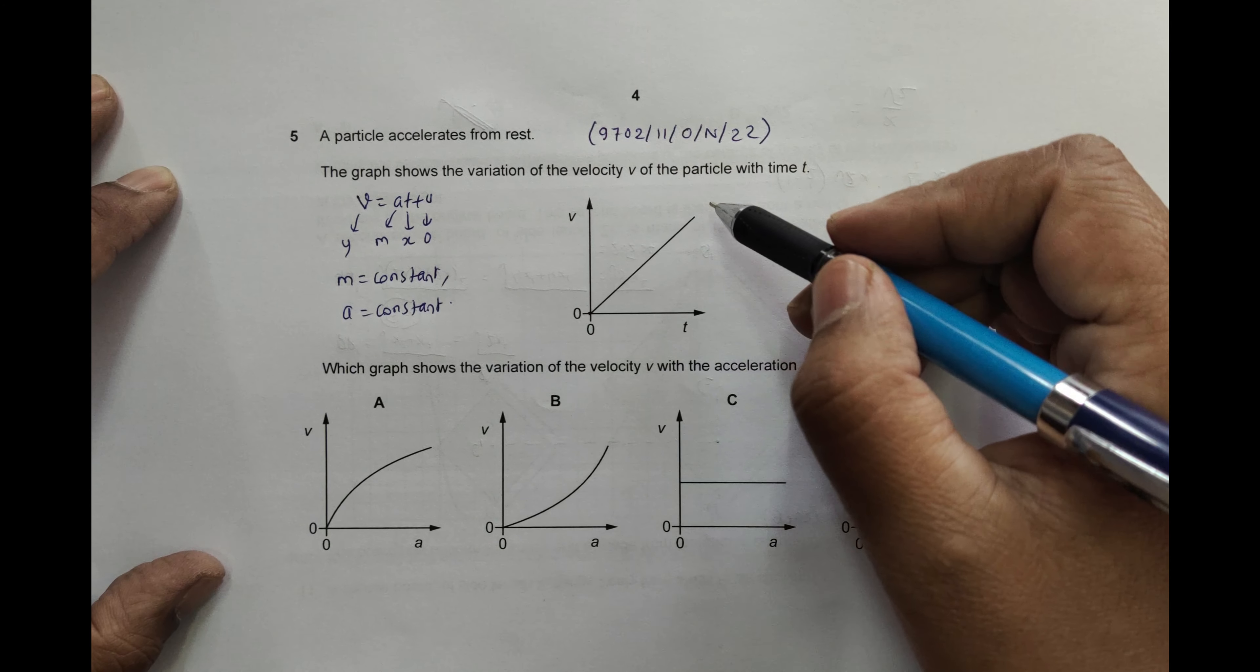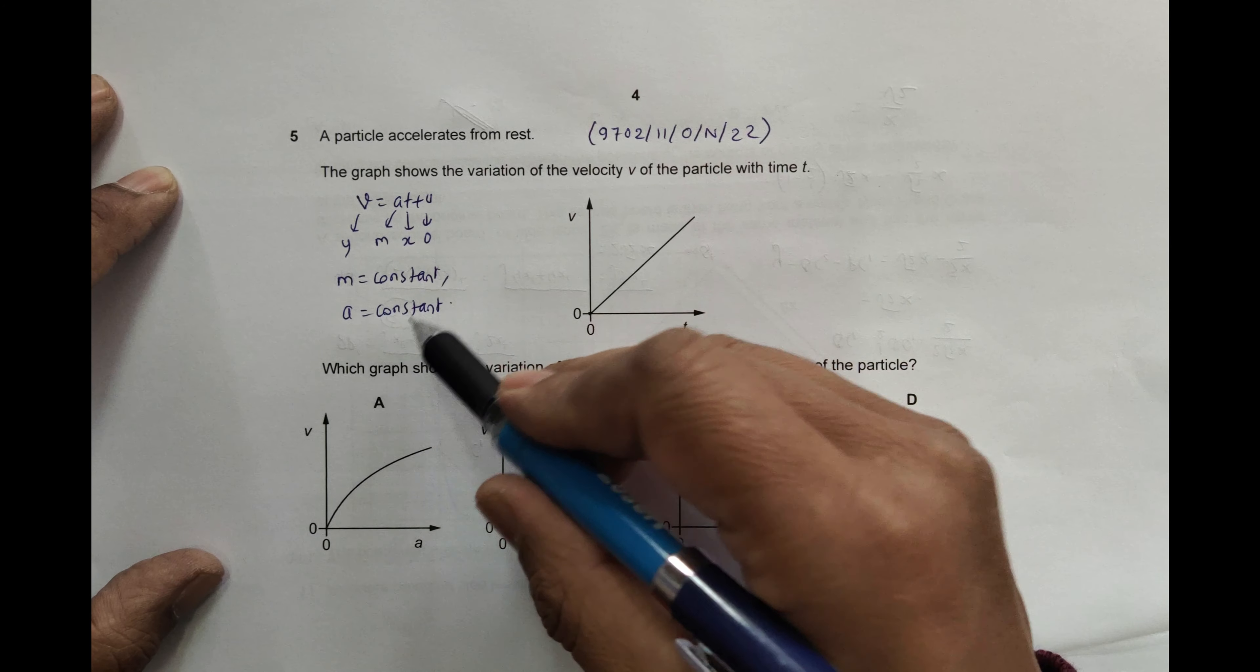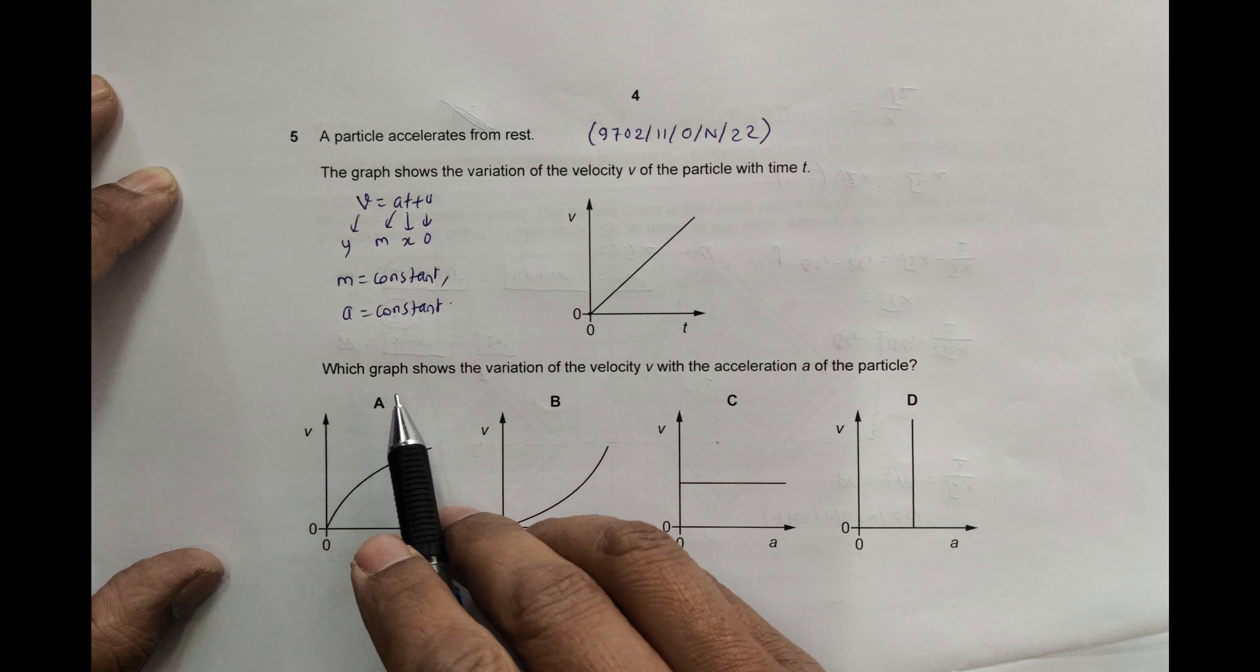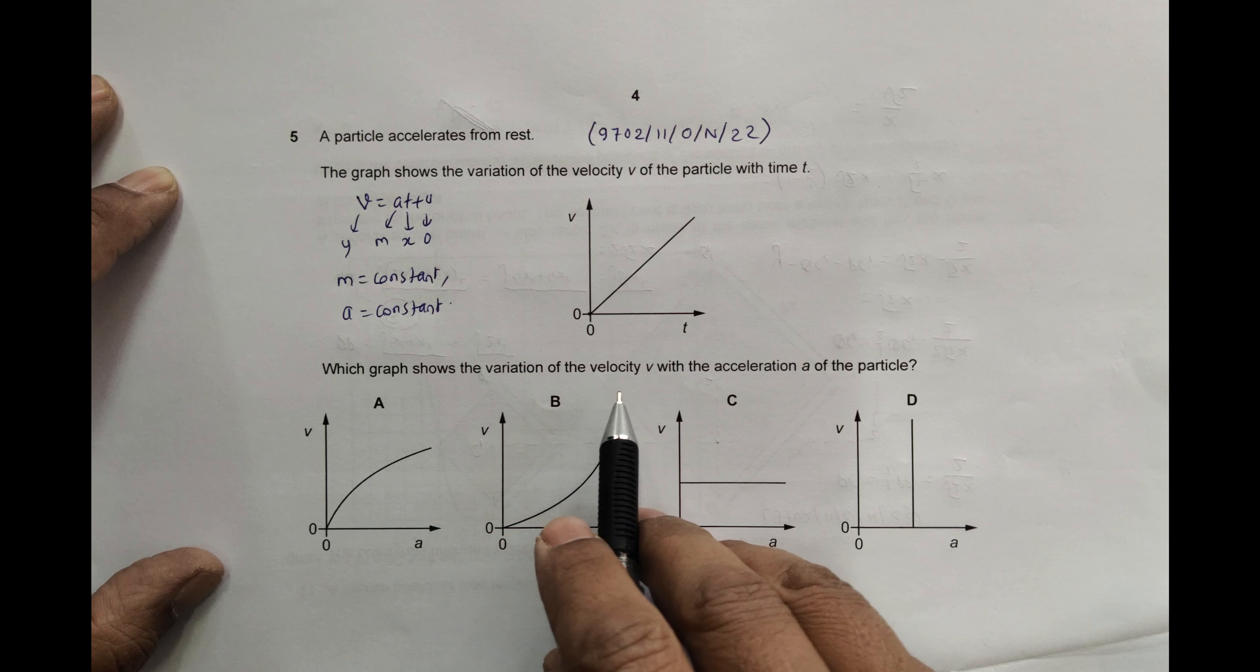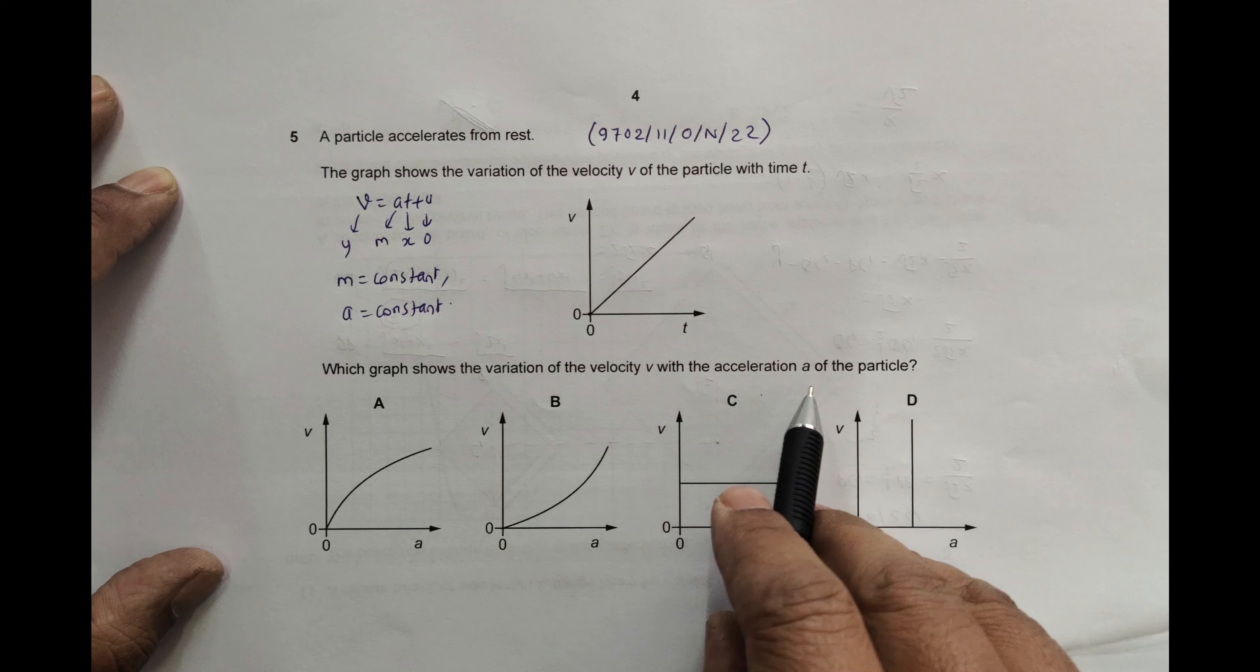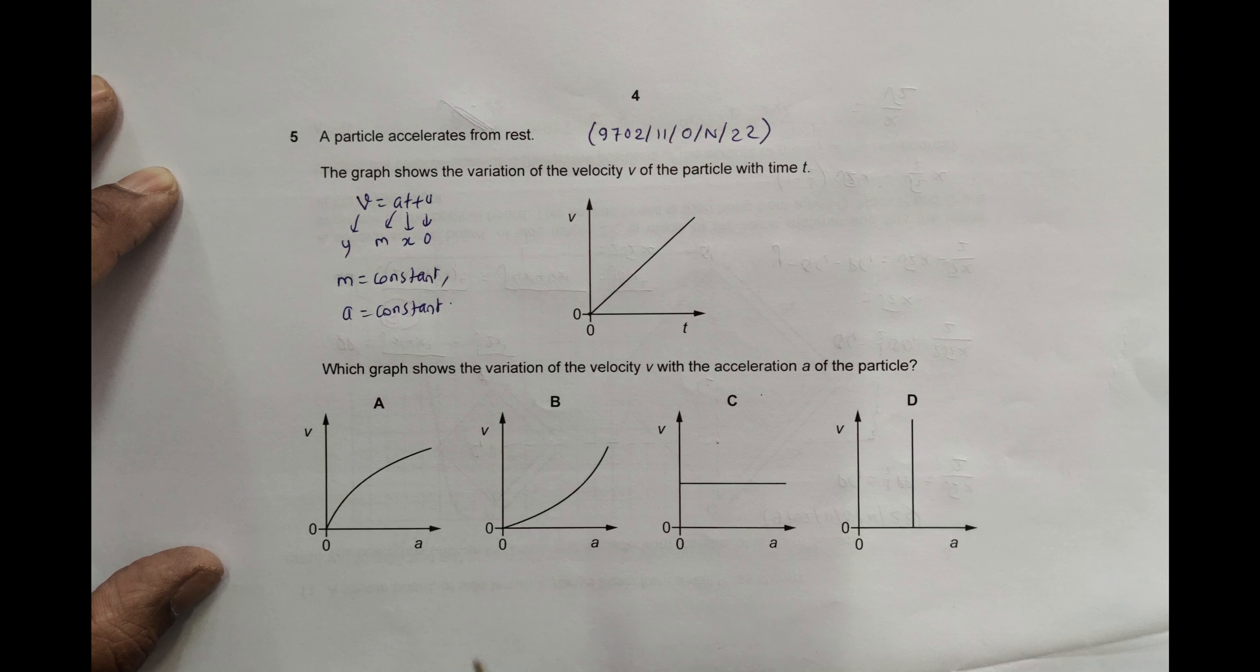Though it is not said here, we have to infer from the graph that a is constant. The question asks which graph shows the variation of the velocity V with the acceleration a of the particle. We have to show the variation of V with acceleration, and take care of the fact that a is constant.